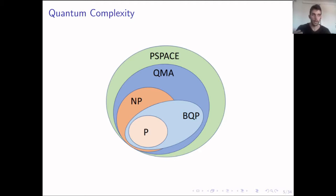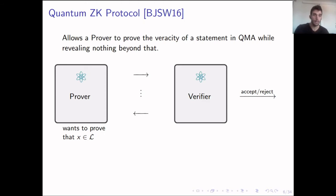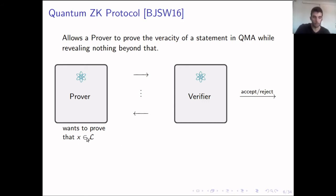QMA is the complexity class which contains all the decision problems where, if the answer is yes, we have a polynomial time quantum proof that can convince a quantum verifier with very high probability in polynomial time. An immediate question is: do we have zero knowledge for QMA statements? And the answer is yes, we do.